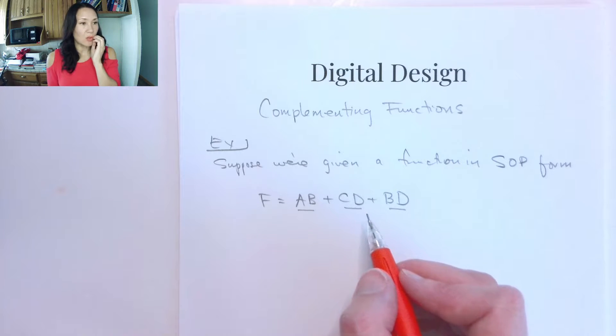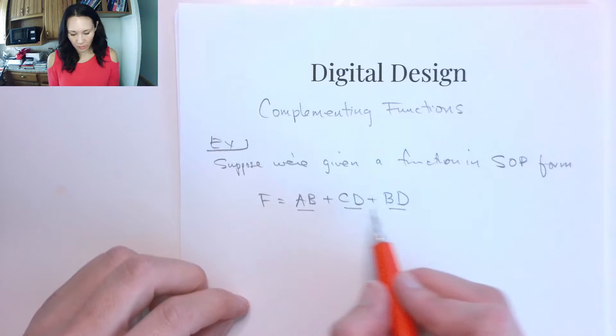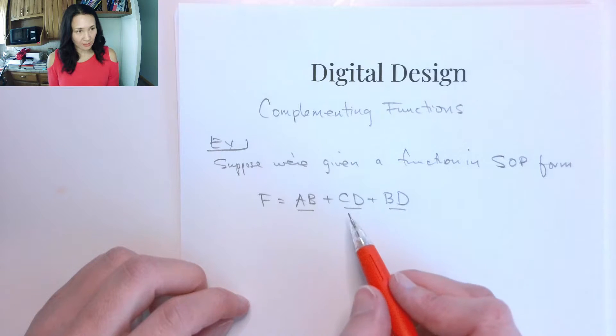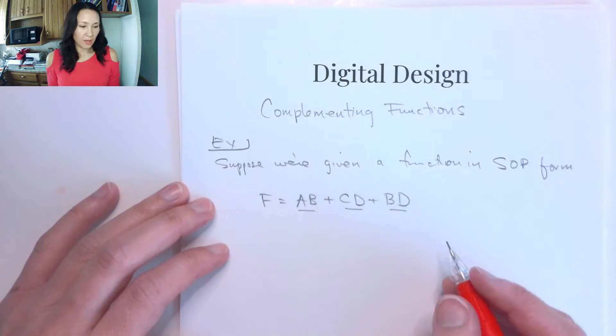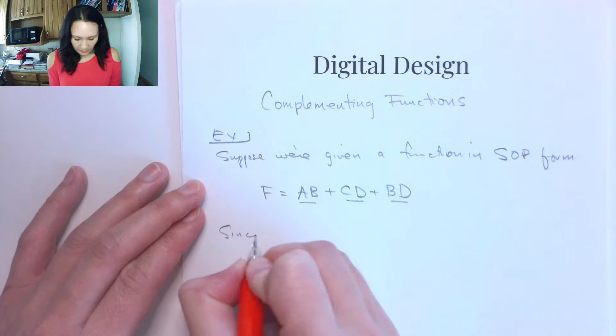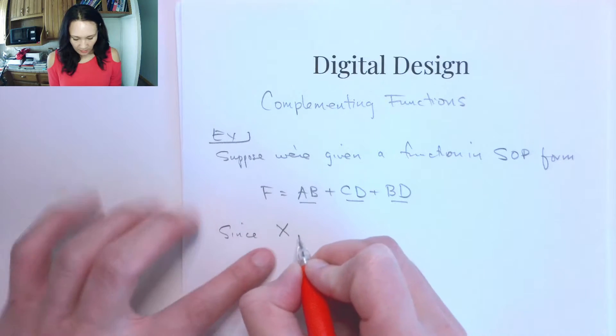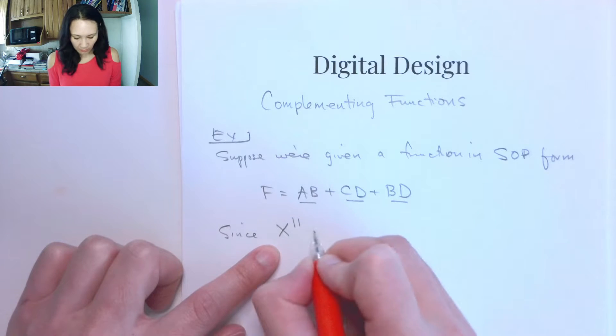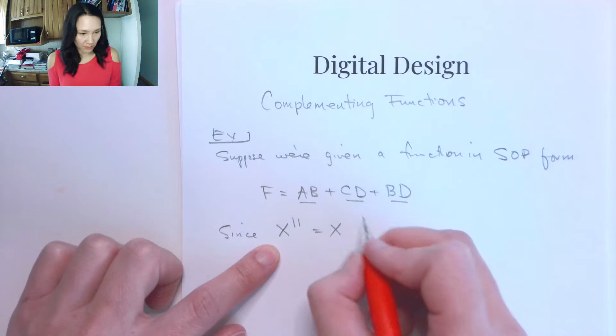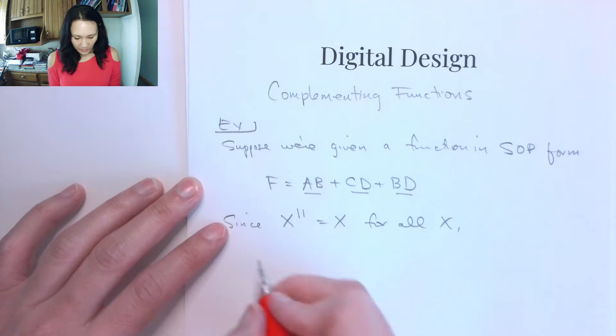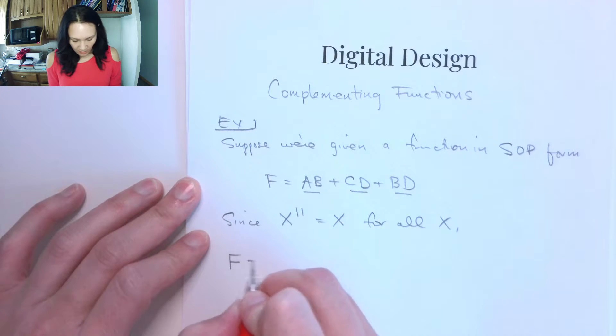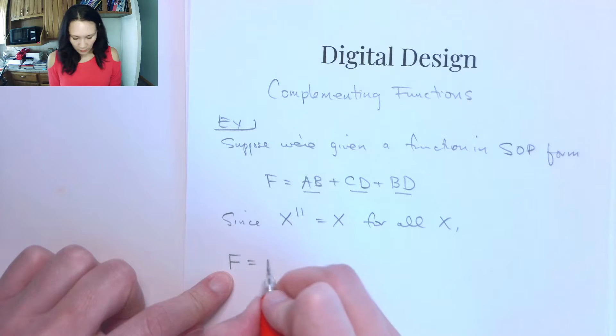This corresponds to a circuit with three two-input AND gates and two OR gates. Now since we know that if we have something and we double complement it, we're just going to get that same something back for all x, we can say that we're not going to change our function at all if we double complement it.